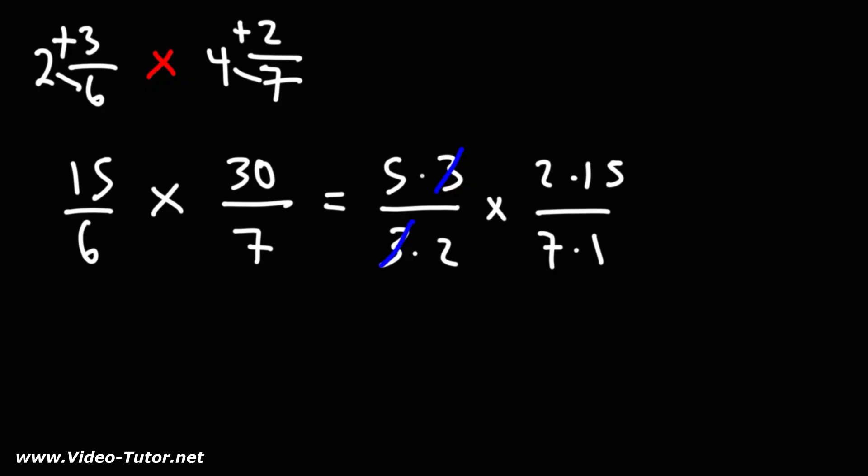Notice that we could cancel a 3, and we could cancel a 2, and that's about it. So what we have left over is 5 times 15. Now we can multiply across. 5 times 15 is 75. 7 times 1 is 7.